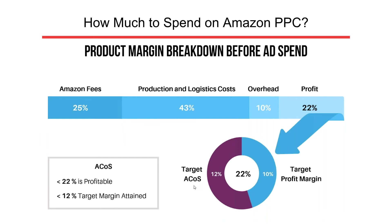When thinking about how much to spend on Amazon PPC, I can't give you a blanket number. It varies very much by category. Some categories like electronic accessories are extremely competitive and your ACoS is probably going to be higher than in a category like business and industrial products where there's generally less competition. What you do have control over as a brand is knowing what your profit margins are and working back from there to figure out how much you can afford to spend on ads.